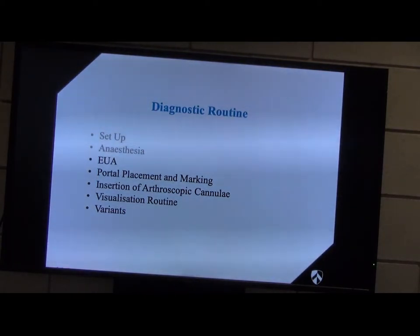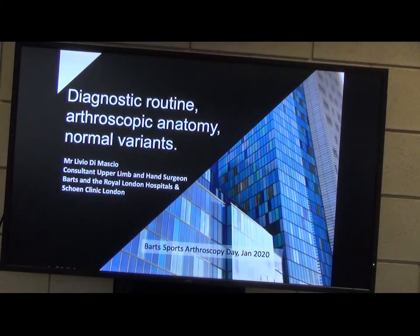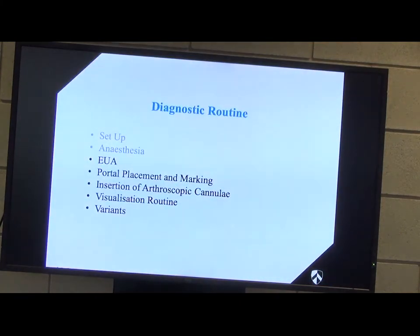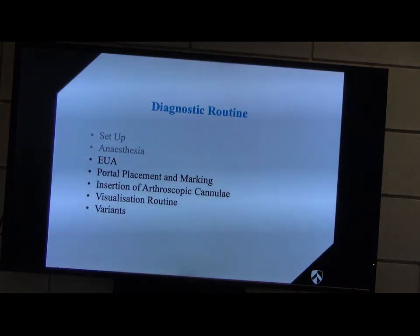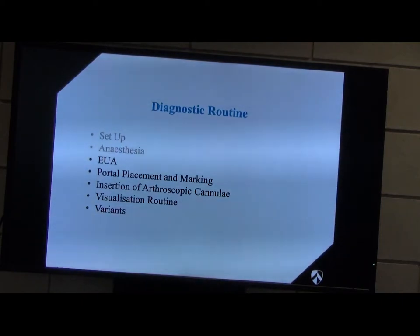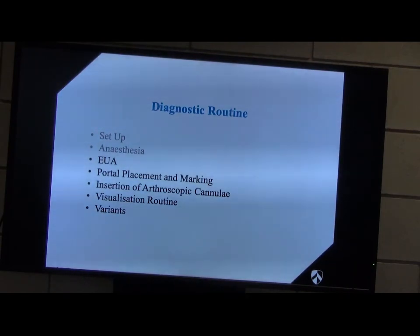So, we spoke about set-up and anaesthesia. What are we talking about now? Diagnostic routines, arthroscopic anatomy and normal variants. We need to know what's normal before we start treating pathology, which we'll be doing at the end of the morning. Once we've positioned the patient, this is a right shoulder beach chair position. We'll do an examination under anaesthetic after we've done our WHO time-out. We'll examine the shoulder, then we think about portal placement and marking if we haven't marked already.